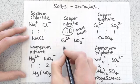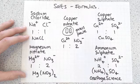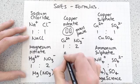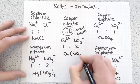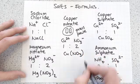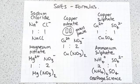That means for every one copper I need two nitrates, so the formula for copper nitrate is Cu, and NO3 goes in brackets with a two down below. Following is the salts done.